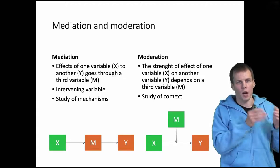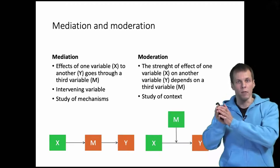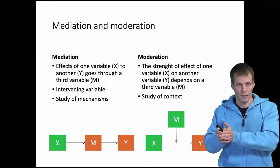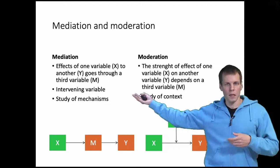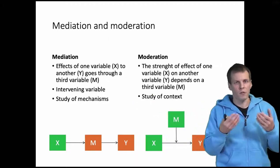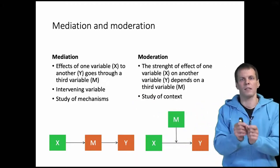For example, studying causes learning, learning causes increased performance on the final exam. So mediation is about mechanisms, and singletonous traits use the term intervening variable. So it's a variable that sits in the middle.